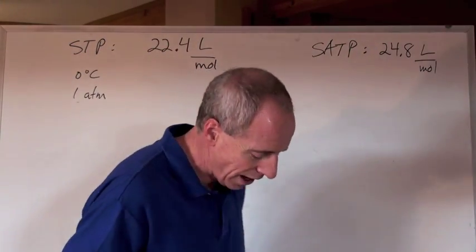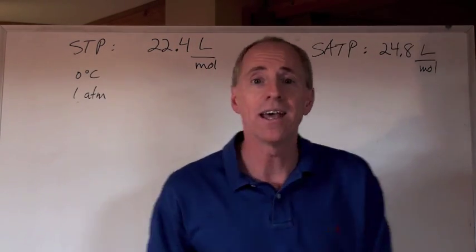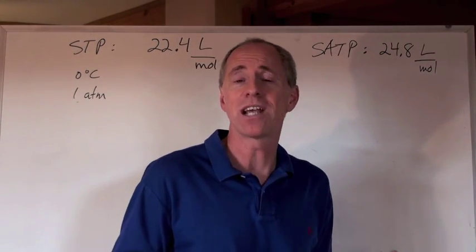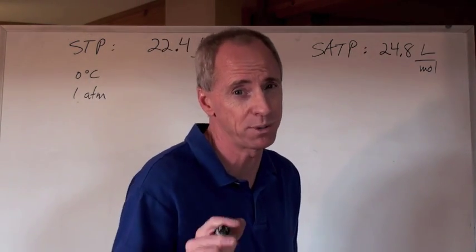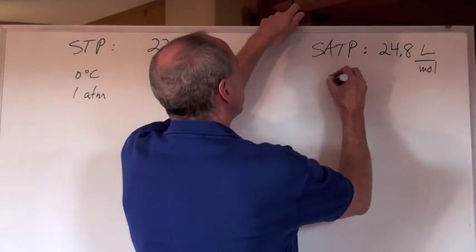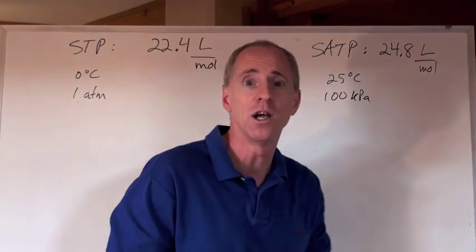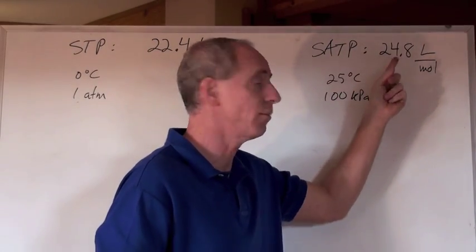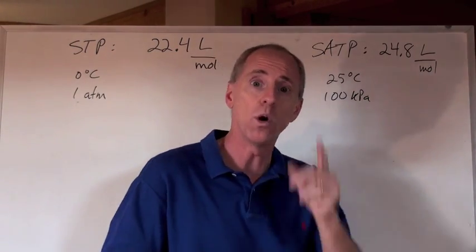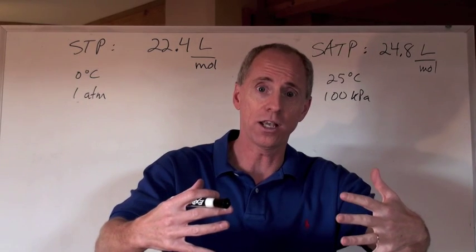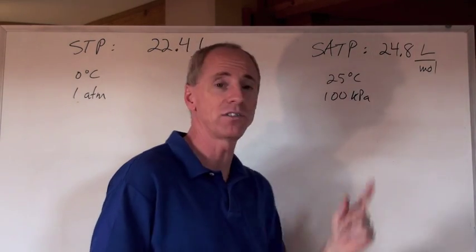SATP is standard ambient temperature and pressure. If you don't want to do the experiment at zero degrees Celsius because it's too cold, then how about 25 degrees Celsius — which is kind of normal room temperature — and 100 kPa, so not quite one atmosphere. The molar volume of a gas at SATP is 24.8 liters for one mole of gas.